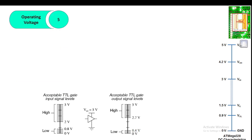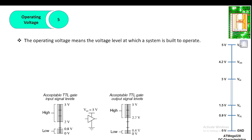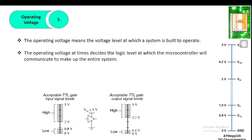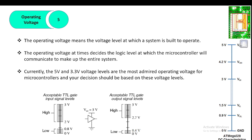The fifth step is the operating voltage, which means the voltage level at which the system is built to operate. The operating voltage determines the logic level at which the microcontroller will communicate within the entire system. Logic levels range from 0–0.8V as low and 2–5V as high, or for TTL gates, 0–0.4V as low and 2.7–5V as high. Currently, 5V and 3.3V are the most common operating voltages for microcontrollers, and your decision should be based on these voltage levels.